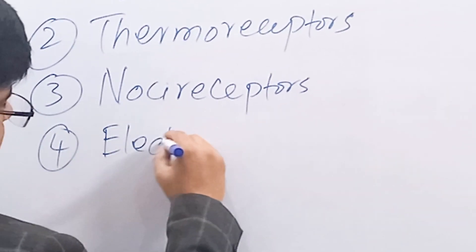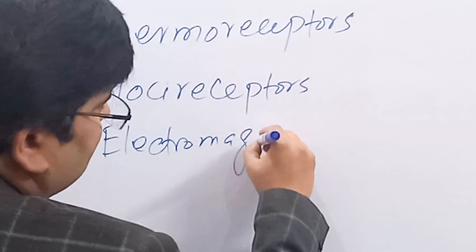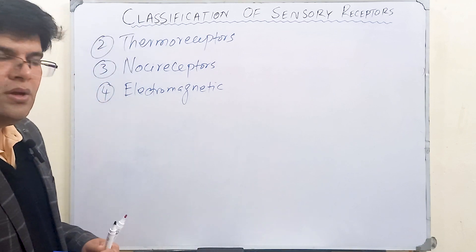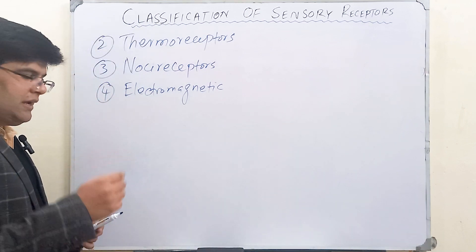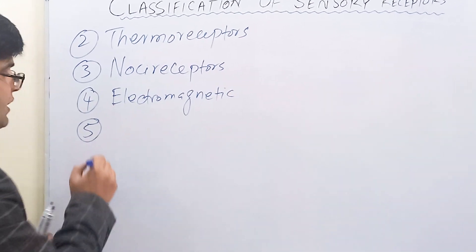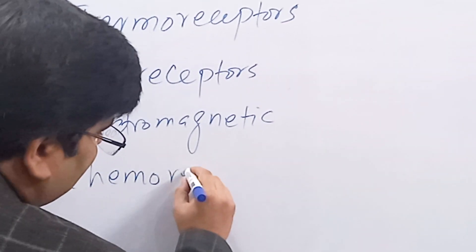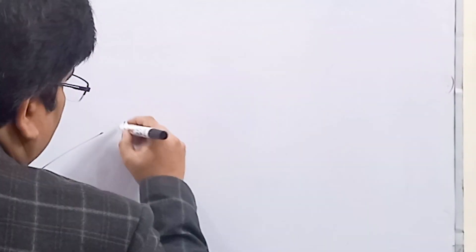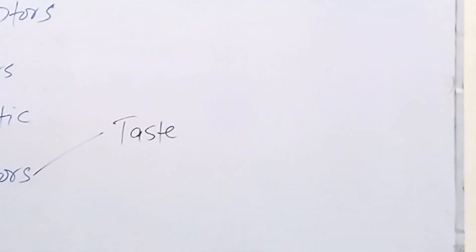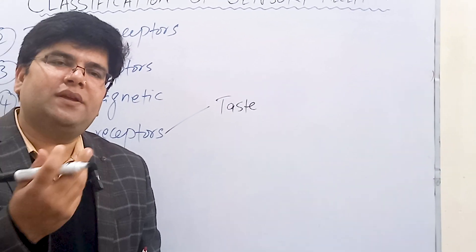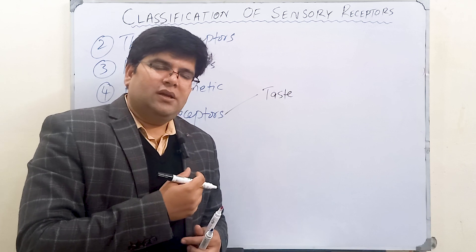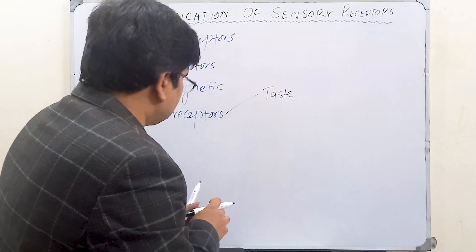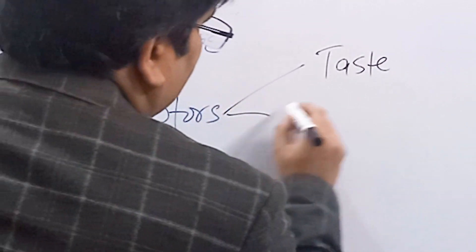Electromagnetic receptors are rods and cones present in the retina of our eyes, and they are sensitive to electromagnetic stimulus — that is, light. Then there is another large category of receptors called chemoreceptors. Different types of chemoreceptors are present in our body; for example, taste receptors present in the taste buds of the tongue detect various taste chemicals like sugar, salt, sour, and bitter.